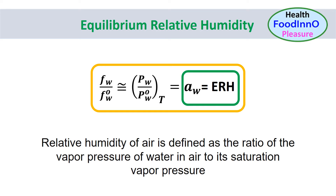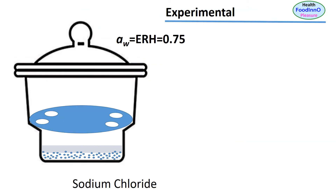Therefore, in most experimental instruments, the equilibrium relative humidity is measured to represent the water activity of a food. We can transform this concept of equilibrium process with a simple experimental setup: we create a specific relative humidity atmosphere inside a desiccator at constant temperature.